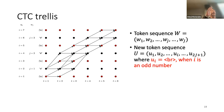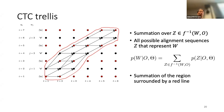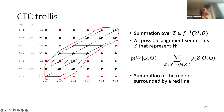CTC takes a summation over all sequences Z that are included in this graph. Z can be any path through the trellis. The summation over all possible Z means summing all possible paths represented by this graph.